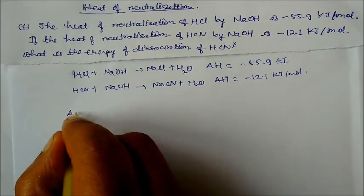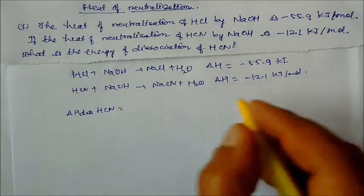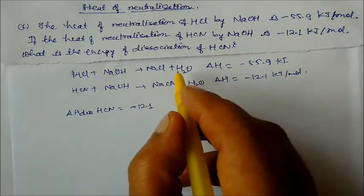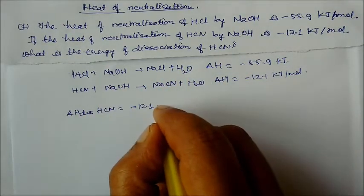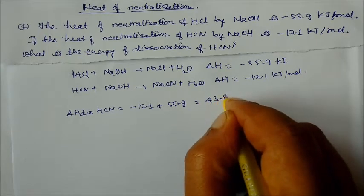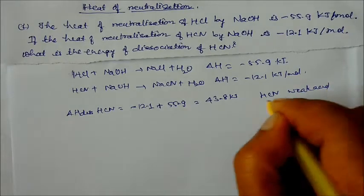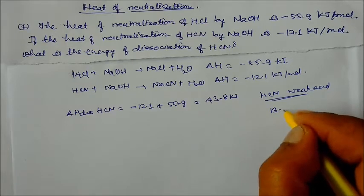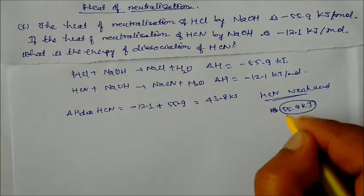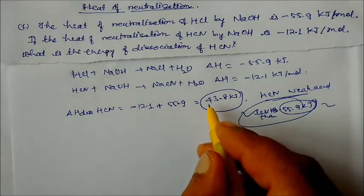To find the delta H of dissociation of HCN: heat of neutralization is minus 12.1, and heat absorbed by formation of water (H⁺ and OH⁻) we take the plus value 55.9. So we get the answer 43.8 kJ. We know HCN is a weak acid, so its neutralization is lesser than 55.9 kJ. The positive dissociation value confirms this.